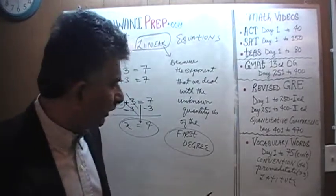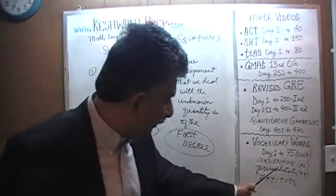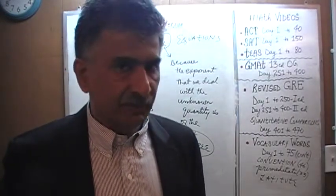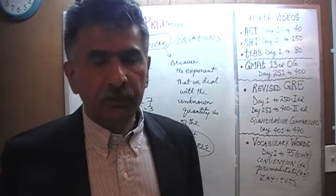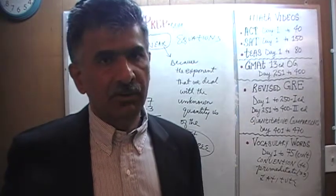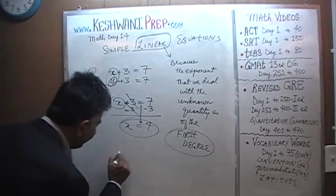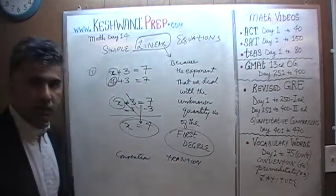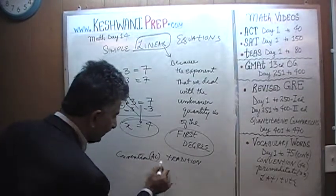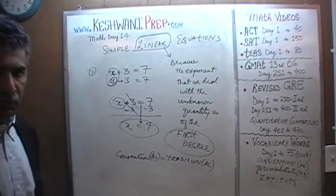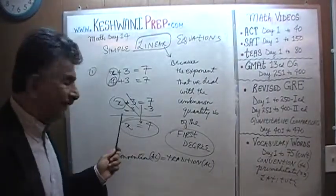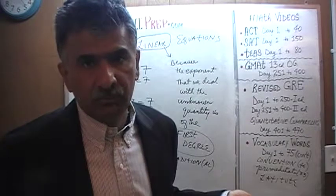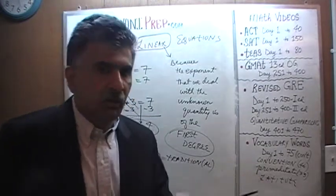The word 'convention' has two meanings. One meaning is a convention as a gathering or meeting. The second meaning is that a convention is a tradition. If you want to make an adjective out of it, add 'al' to the end — it becomes 'conventional,' which means traditional. The conventional way is to keep the unknown on the left-hand side and the known quantities on the right-hand side. There is no real reason for it — it's just a tradition, just what everybody does. It makes it easier if you follow the norm.